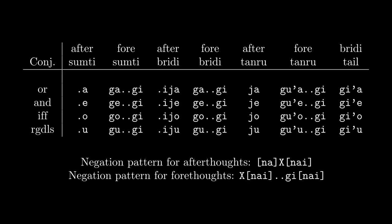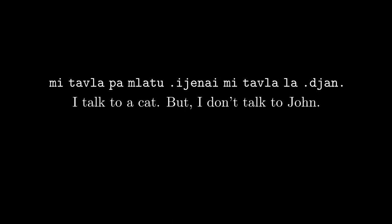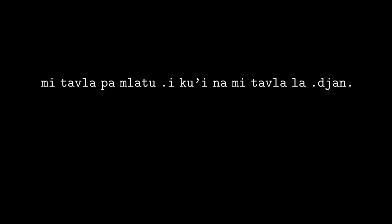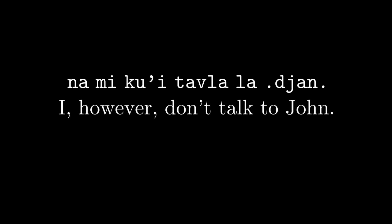We can sum things up in a nice table. Now, you might be tempted to translate something like: 'mi tavla pa mlatu i je nai mi tavla la .djan.' as 'I talk to a cat but I don't talk to John.' That is not the correct translation — by using 'but' you're pointing out a contrast, and there is a way to do that in Lojban: 'mi tavla pa mlatu i ku'i na mi tavla la .djan.' — I talk to a cat but I don't talk to John. 'ku'i' is a discursive meaning 'but', 'however', or 'in contrast'.